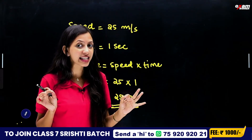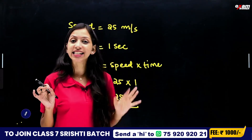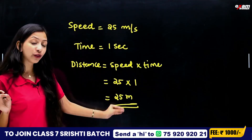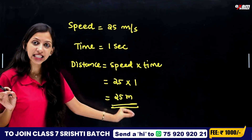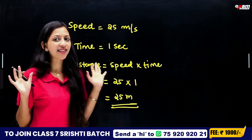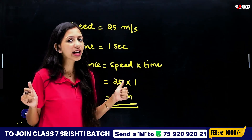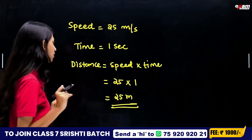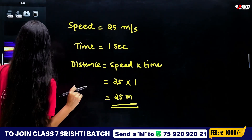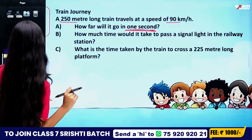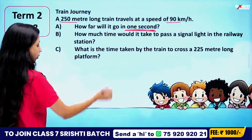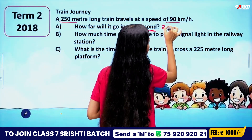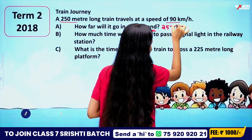In one second, we travel 25 m. Now, 25 m is the distance. We have to answer: 25 m.